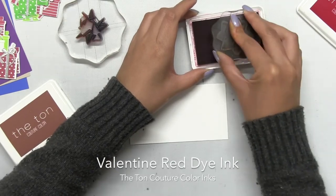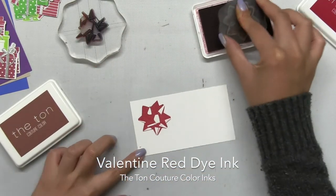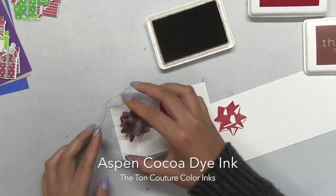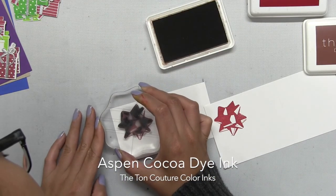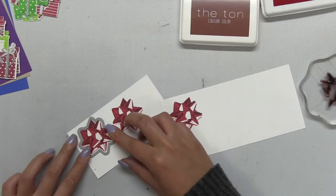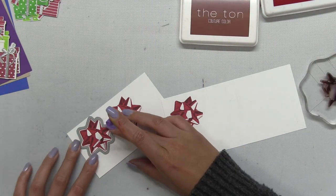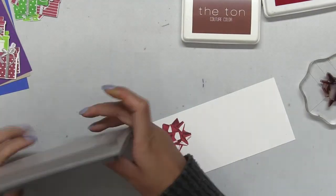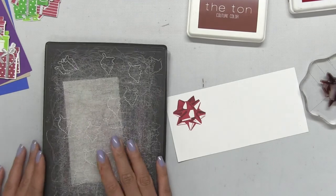Now I'm going to stamp our two layered holiday bows using our Valentine red dye ink and our Aspen cocoa dye ink. This set is truly one of our classic stamp sets. We came out with this a few years ago. We were the first one to come out with a layering bow and it's just absolutely gorgeous design. I use it every year.